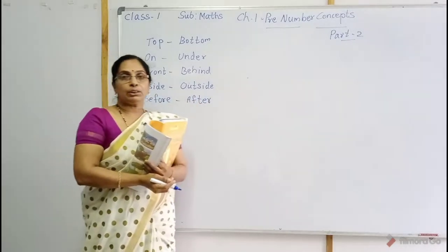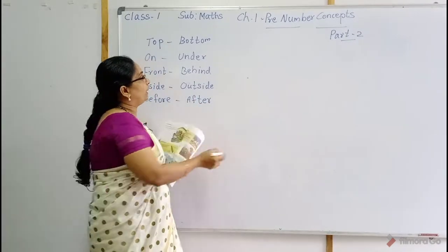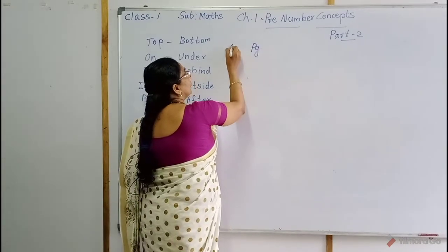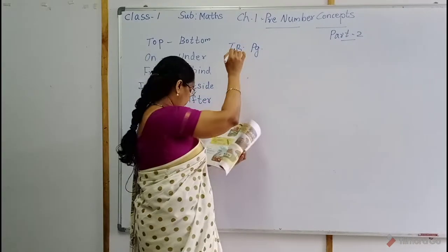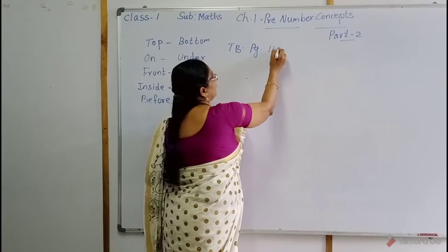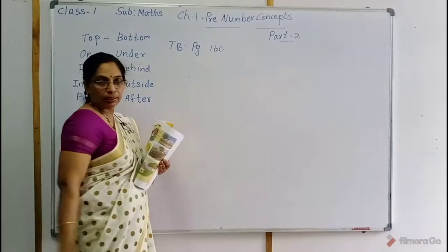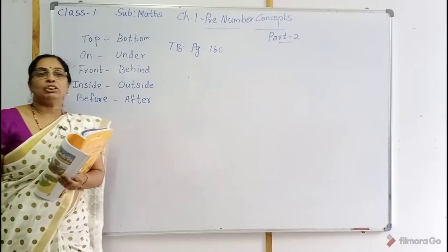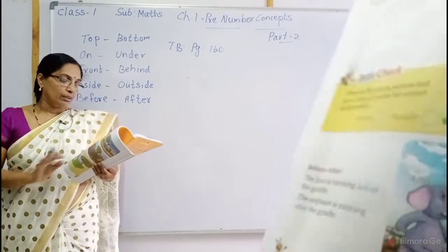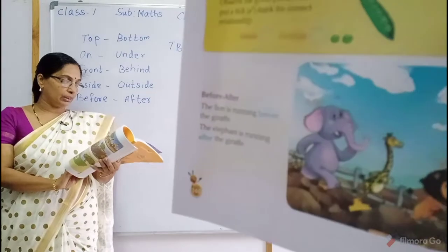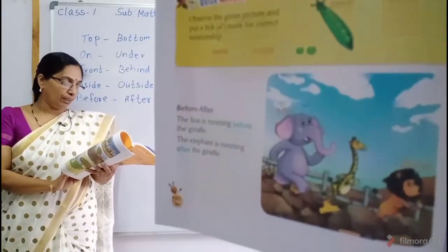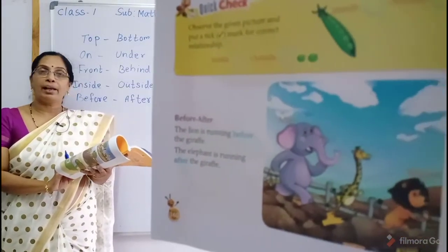See the textbook, children. Textbook page 160. You can see a picture there. The picture is showing three animals: elephant, giraffe and a lion.